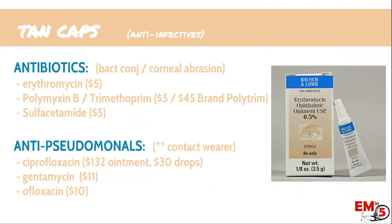Here are different antibiotic options. For basic bacterial conjunctivitis or a corneal abrasion, any of the top three are pretty good — as long as you prescribe the generic, they're all pretty cheap, in the $5 range. Erythromycin is probably the one I use most commonly. If you have someone who wears contacts and you need to prescribe an antipseudomonal antibiotic, these can get really expensive, so be careful. Ofloxacin and gentamicin are the cheapest as long as you prescribe the generic.